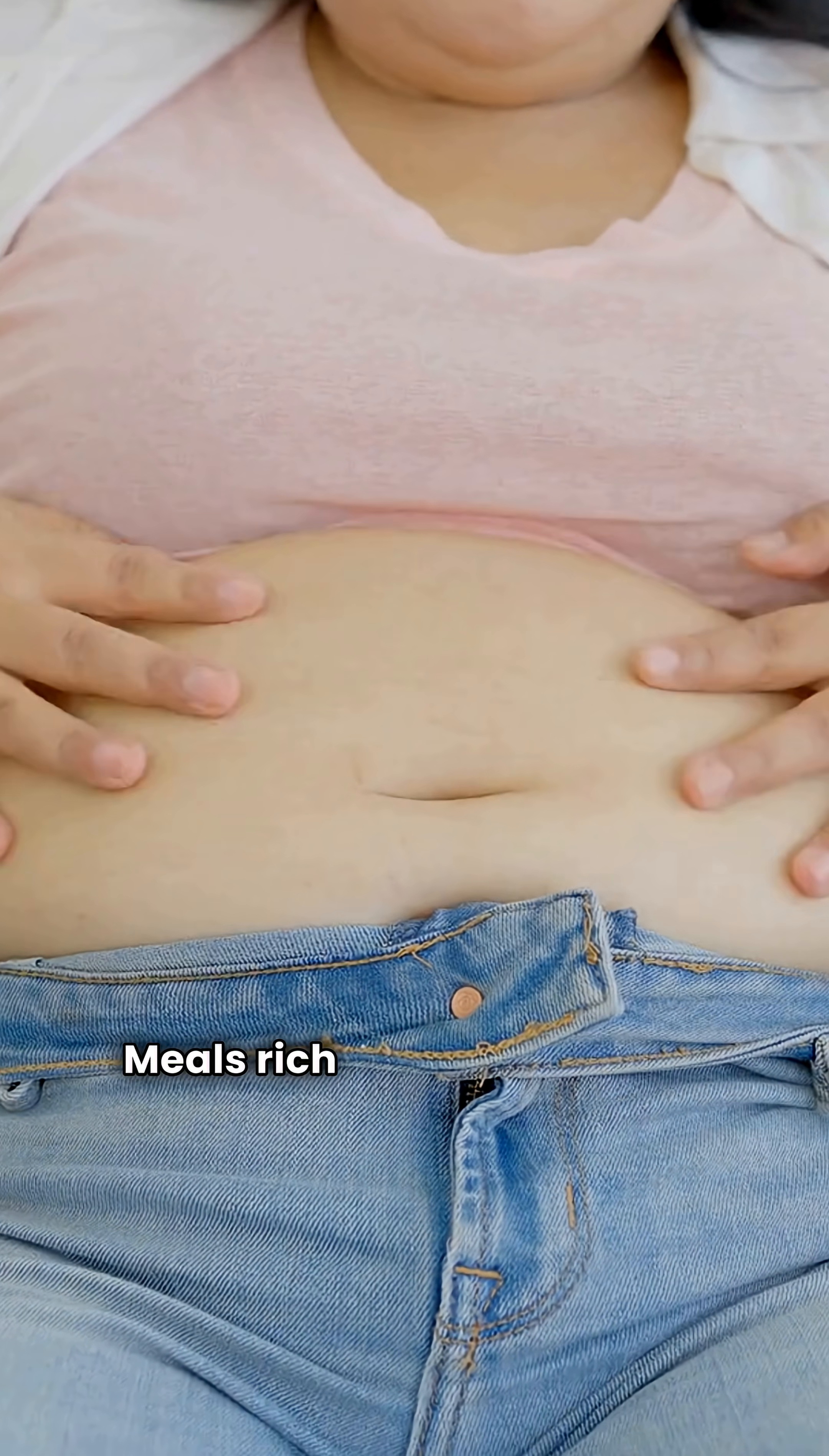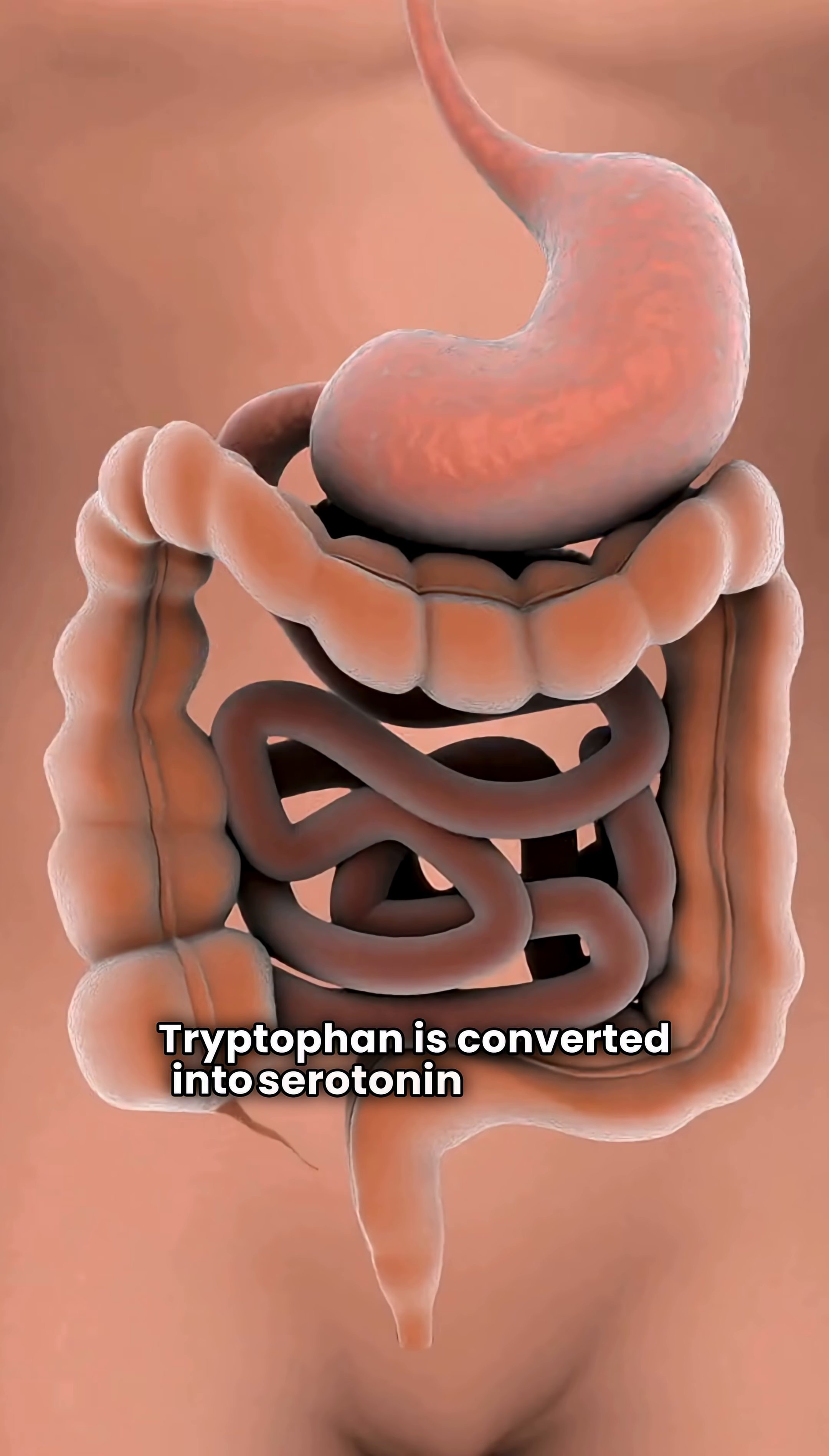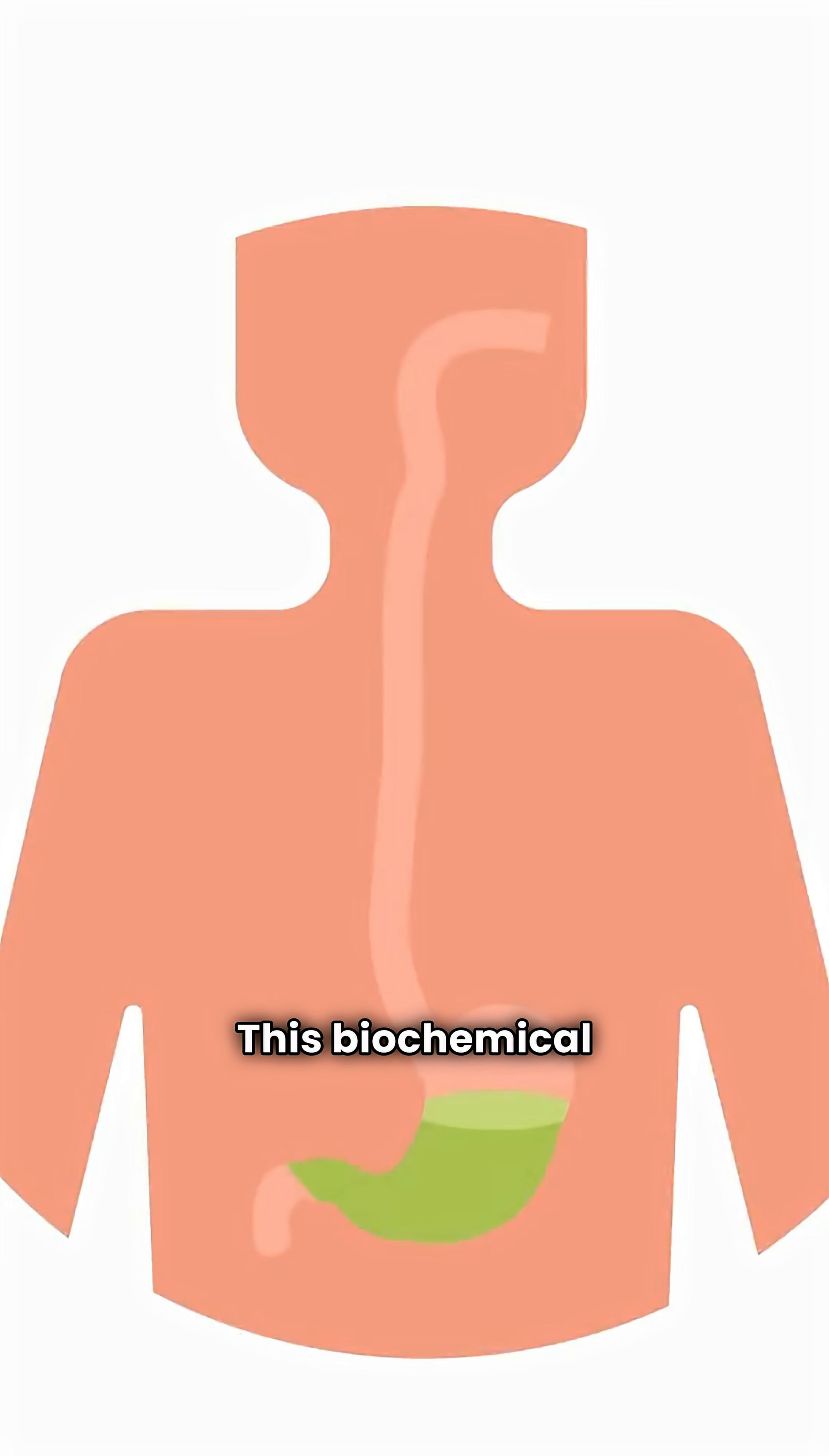Meals rich in carbohydrates stimulate insulin production. Insulin helps transport tryptophan, an amino acid, into the brain. Tryptophan is converted into serotonin and then melatonin, a hormone that promotes sleep. This biochemical process increases drowsiness after a meal.